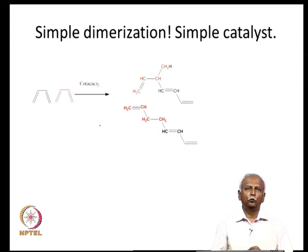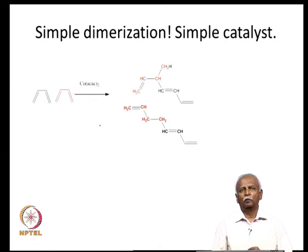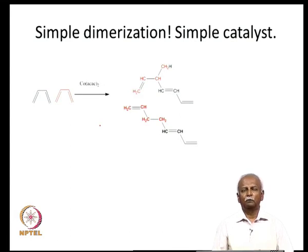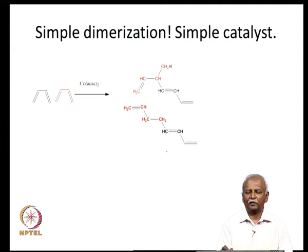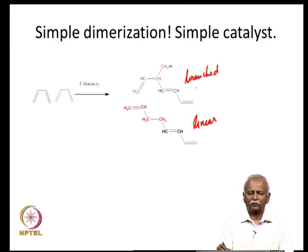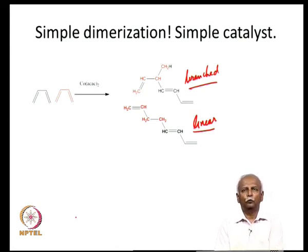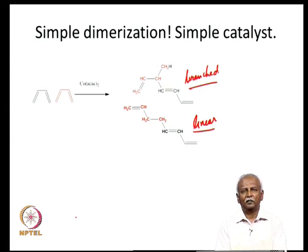Reactions can also be done with multiple enes — dienes and trienes — and a variety of reactions are known, though the principles are the same. Oxidative coupling of two dienes can give either a linear product or a branched product. These dienes are not as readily available as ethylene, so these reactions are less studied, but they are also possible.